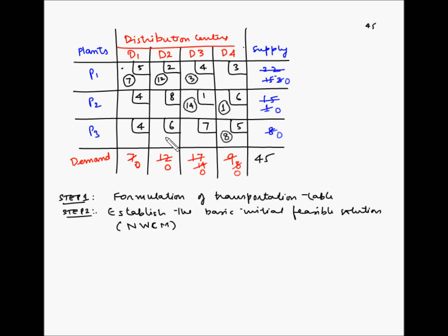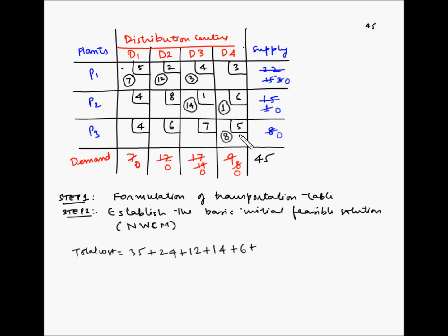Now let us calculate the total cost, which is the sum of units allocated to each square multiplied by the unit cost of shipment for that square. Total cost = (7 × 5) + (12 × 2) + (3 × 4) + (14 × 1) + (1 × 6) + (8 × 5) = 35 + 24 + 12 + 14 + 6 + 40 = 131 rupees.